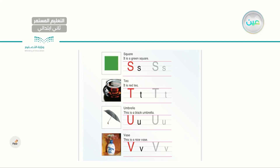Next one is letter S. Square, sun. I have the letter S, capital and small. Next I have letter T — capital T and small t. Next one is letter U — capital U and small u. The word is umbrella. Last letter here is letter V. The word is vase, van. It's different from FA, fish — this is VA, van.